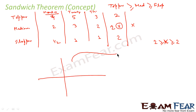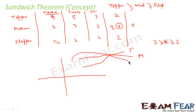Let's suppose this top curve is the topper who always watches more, this lower one is the flopper who always watches less, and the middle one is the mediocre. Flopper always watches less. But on a particular day, when the topper and the flopper are meeting — that is, watching the same number of videos — in that case, the mediocre should also watch the same number of videos. This is because the topper is always greater than or equal to the mediocre, and the mediocre is always greater than or equal to the flopper.